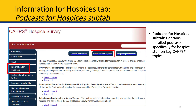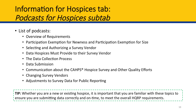The next sub-tab under Information for Hospices is Podcasts for Hospices, which contains detailed podcasts on many key CAHPS topics. For each podcast, both a module and a transcript are available. The list of podcasts and the key CAHPS topics they explore are listed on slide 13. These podcasts are a wealth of information. It's advised that whether you are a new or existing hospice, you review these podcasts to be familiar with these topics and ensure you are submitting data correctly and on a timely basis to meet the HQRP requirements.